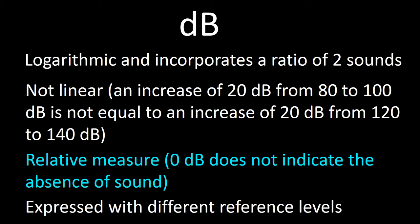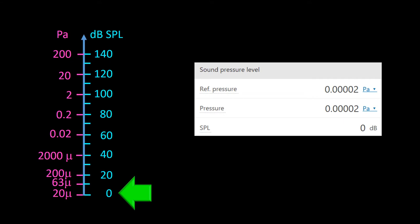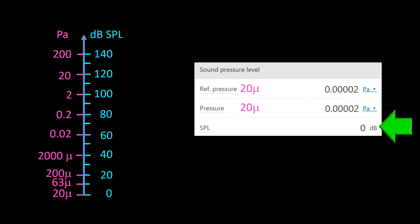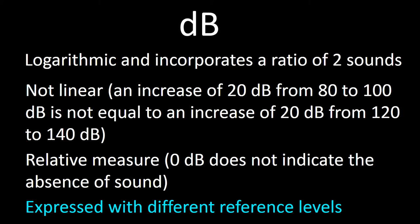The third reason dB is a phony unit is that dB is a relative measure. 0 dB does not indicate the absence of sound. By convention, 0 dB corresponds to a pressure of 20 micropascals. So a sound that creates a pressure of 20 micropascals corresponds to 0 dB. The fourth reason is that dB is expressed in different reference levels, which in addition to making dB unusual makes it very confusing. I will expand on the relation between dBs and the different reference levels in the next few frames.